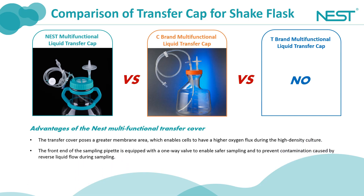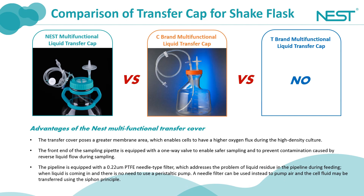Let's summarize the comparisons between the Nest multifunctional transfer cap and competitors. Brand T offers two-way and inverted liquid transfer caps but doesn't have a multifunctional transfer cap. The membrane area of the Nest product is much larger than that of the Brand C product, enabling denser cell culture. The Nest product is equipped with a one-way valve for sampling, while Brand C only has a sampling tip instead of a sampling valve. Our multifunctional transfer cap has a PTFE needle filter, while Brand C doesn't. Our multifunctional liquid transfer cap can also be used for liquid transfer without a peristaltic pump by adding a syringe on the needle filter for gas aspiration, transferring cell-containing liquid based on the siphon principle.